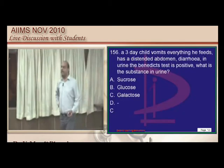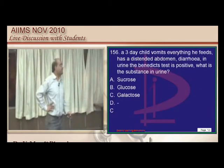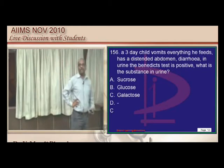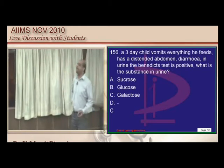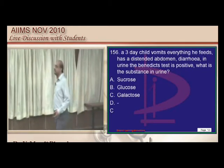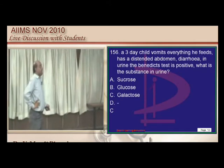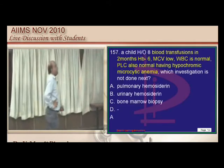A three-day-old child who vomits everything, has a distended abdomen, and Benedict's positive urine — the answer is galactose.